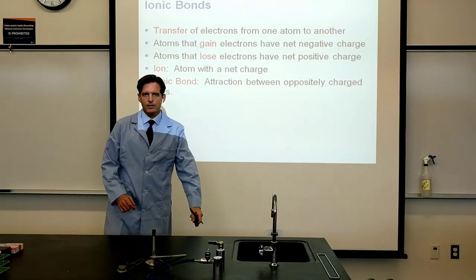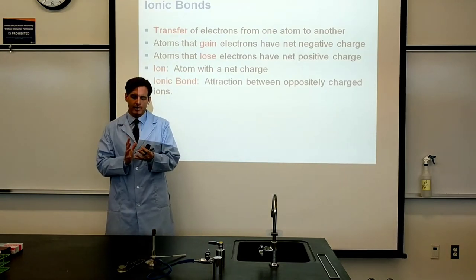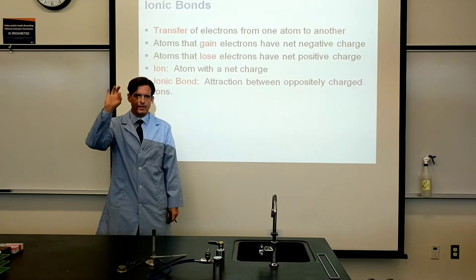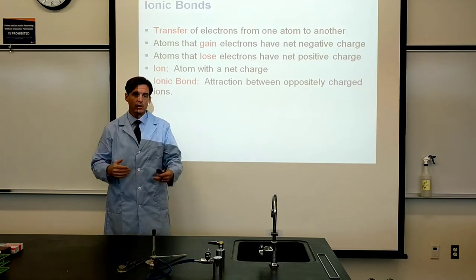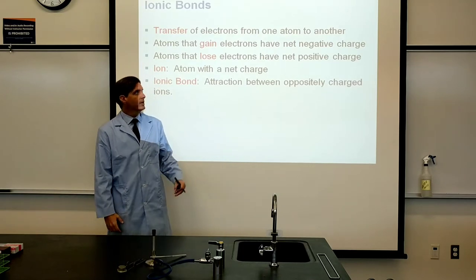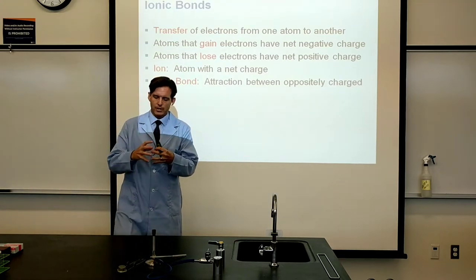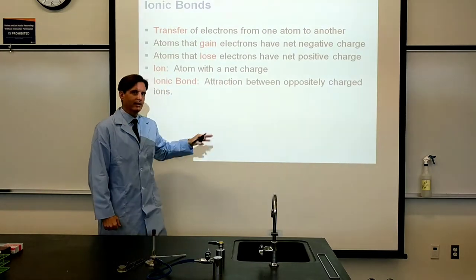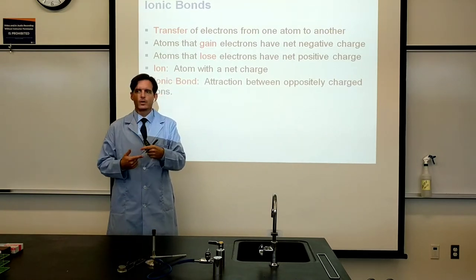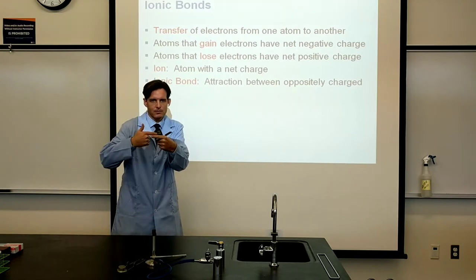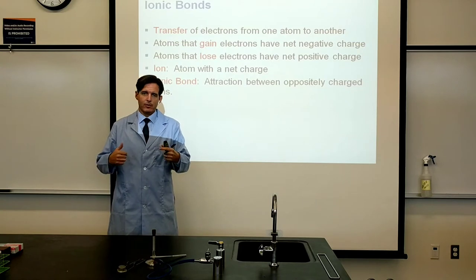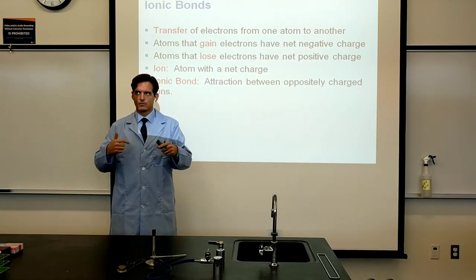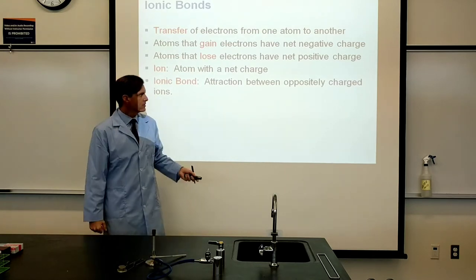Ionic refers to ions — an ion is an atom or molecule that has a charge. Whenever you see a plus or minus sign denoting charge, that refers to an ion. Opposite charges attract: negative and positive charges want to join one another. Like charges repel — two positive charges repel, two negative charges repel. Table salt — sodium chloride — is the classic example of an ionic bond forming.